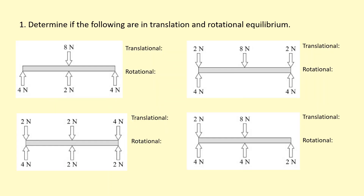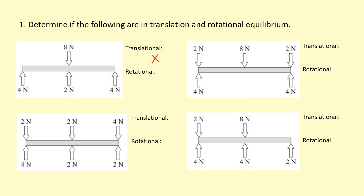Let's consider these examples and determine if they're in translational and rotational equilibrium. In the first example, we've got a total force of 10 newtons acting upwards and only 80 newtons acting downwards, so it is not in translational equilibrium. To consider rotational equilibrium, I'm going to take moments about the center. One force makes it go clockwise and the other anticlockwise; they cancel out because they're equal-sized forces, so it is in rotational equilibrium.